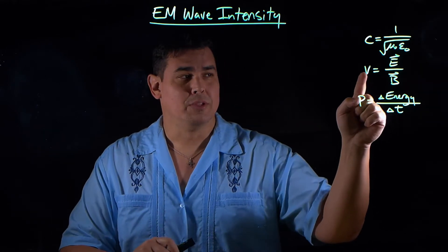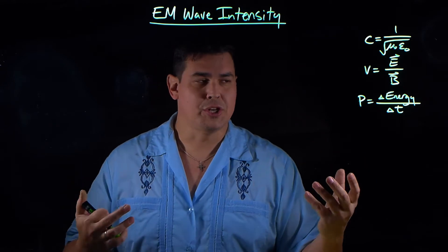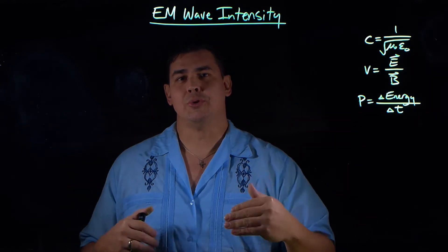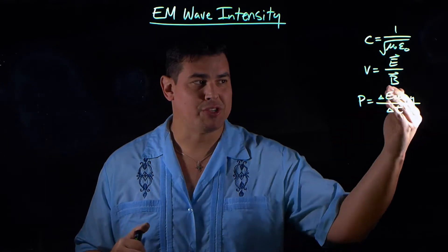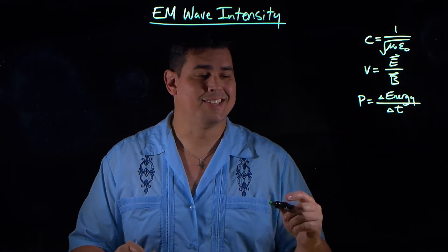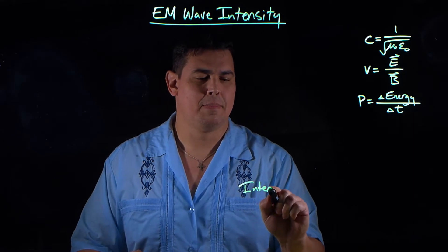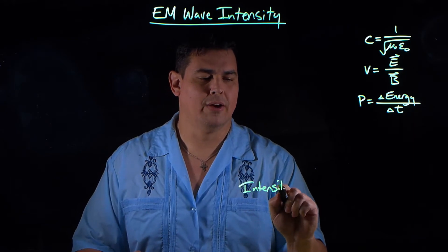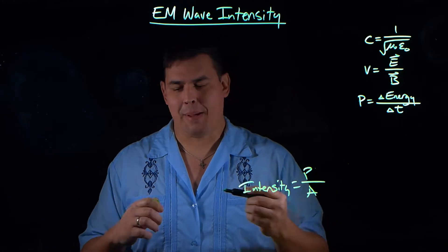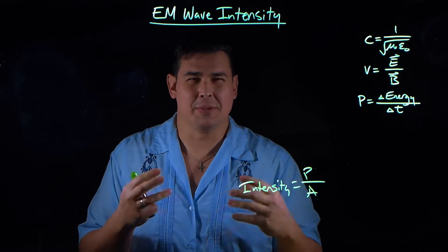As a review, power is the rate at which you use energy — power is just energy divided by time. Now let's define intensity. Intensity is power over area, so how much power hits a specific area.